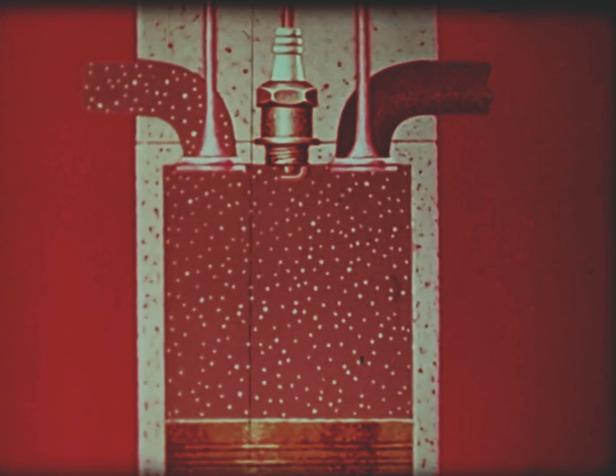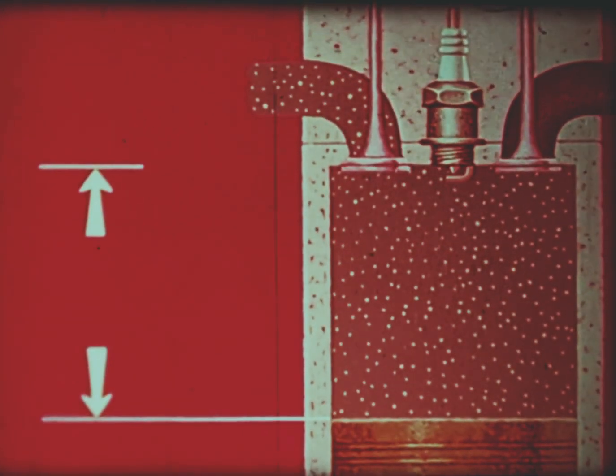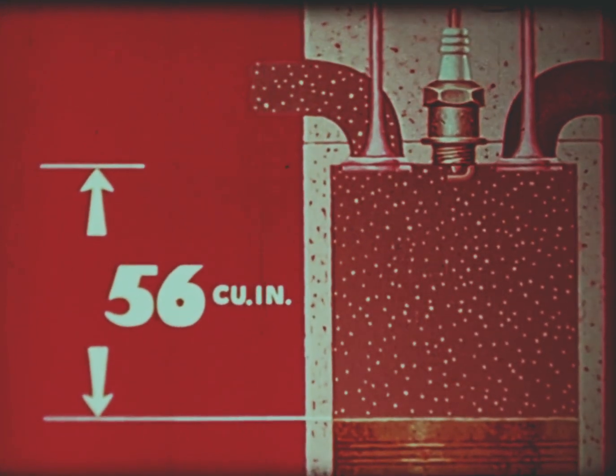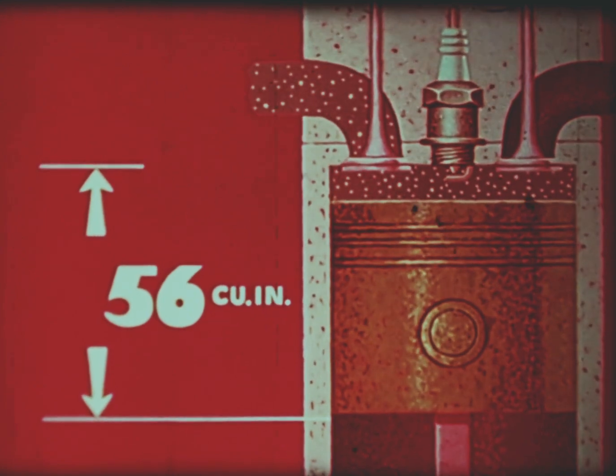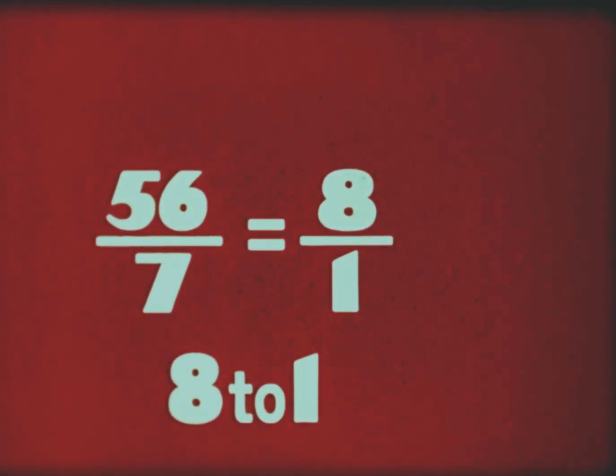At the bottom of the stroke, the cylinder space has a certain volume, the space for the fuel and air mixture. Say it's 56 cubic inches. As the piston rises, it compresses the air and fuel mixture into a very small space. Say, 7 cubic inches. That means I have a compression ratio of 56 to 7, or 8 to 1.